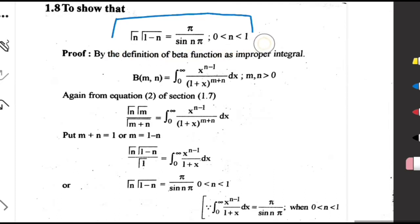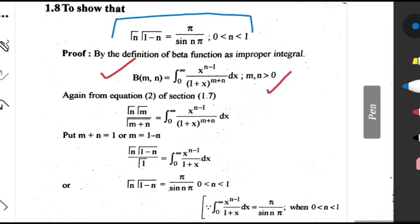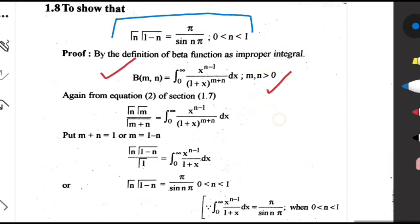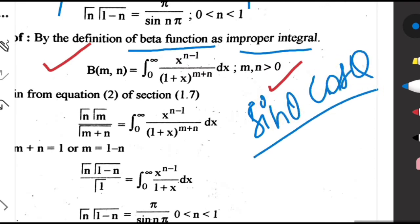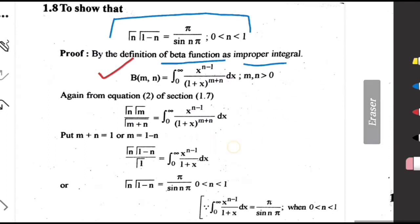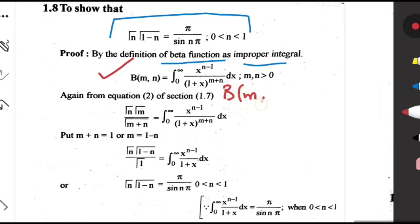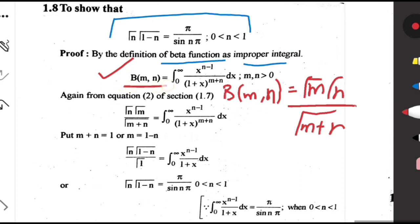By the definition of the beta function, we know that B(m,n) equals the integral from 0 to infinity of x^(n-1) divided by (1+x)^(m+n). In the previous video I told you that the beta function can be written in two forms — as an improper integral or in terms of sin(θ) and cos(θ). For this proof we are taking the improper integral form. In the next step we use the relation between beta and gamma: B(m,n) = Γ(m)Γ(n)/Γ(m+n).